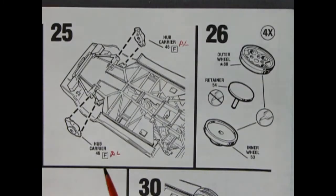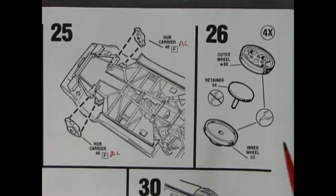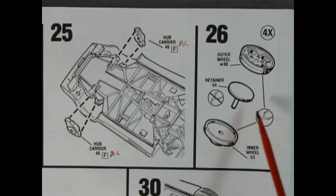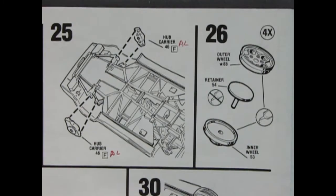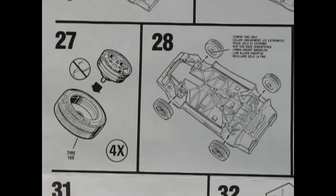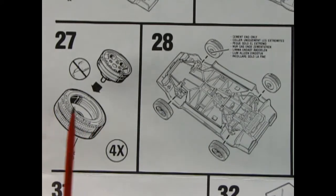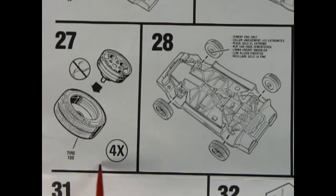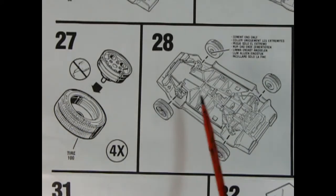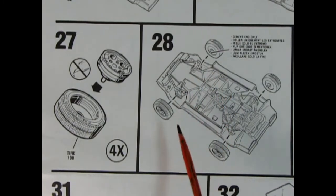Panel 25 shows our hub carriers being glued into place. Then we've got that three-piece wheel with the outer wheel, the retainer, and the inner wheel. Make sure you don't get any glue on that retainer or you're going to lock that wheel in place. Panel 27 shows our completed wheel being dropped into that nice Pirelli tire - you got to make up four of these. Panel 29 shows how those wheels and tires get glued onto the chassis.